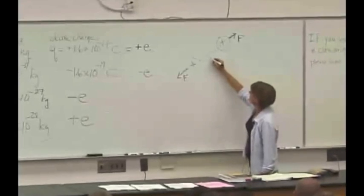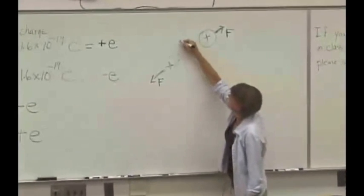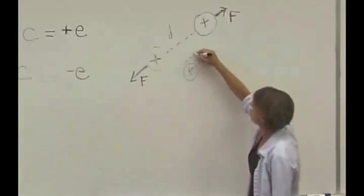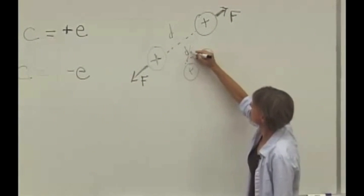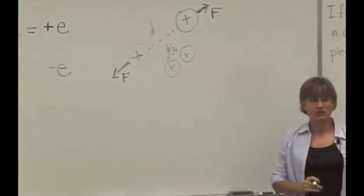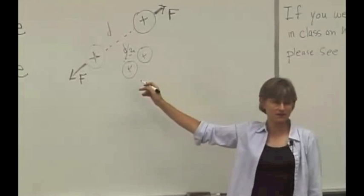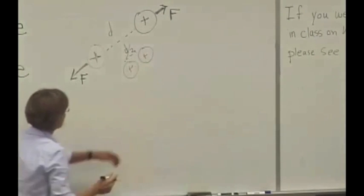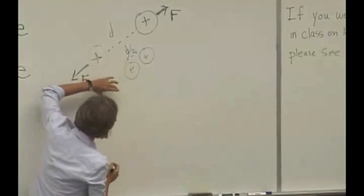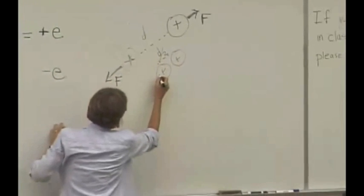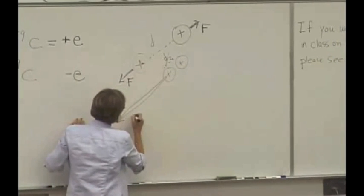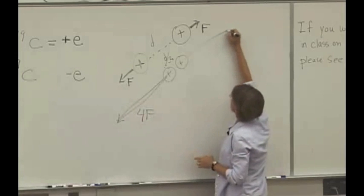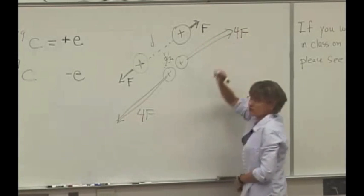You might even know that if you put them twice as close together, so if we separate this by a distance d, if we brought them together a distance d over 2, what would happen to the force? It gets bigger by a factor of 4, doesn't it? Because it depends on 1 over the distance squared, so I should draw this force 4 times greater. And this force would also be 4 times greater.